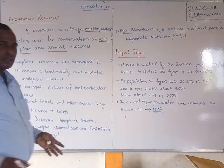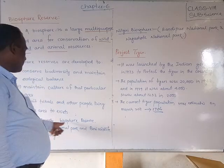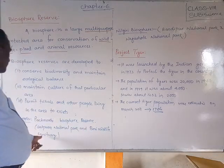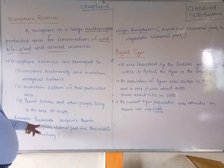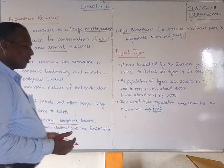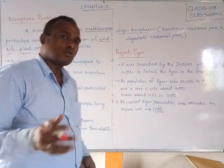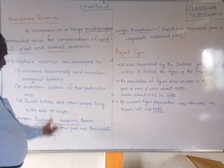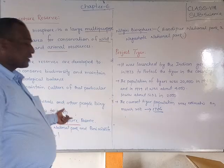What are the biosphere reserves in India? One example is the Panchmarhi Biosphere Reserve, which includes the Satapura National Park and Bori Wildlife Sanctuary. So the Panchmarhi Biosphere contains both a national park and a wildlife sanctuary.